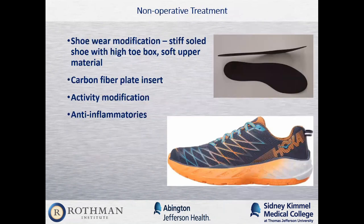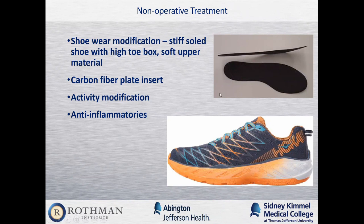Initial treatment includes non-operative shoe wear modification — a stiff-soled shoe like a Hoka with a high toe box to allow room for the bone spur and a soft upper portion that doesn't put pressure on the area. A carbon fiber plate can be placed in the shoe to artificially stiffen it. Activity modification and anti-inflammatories are also recommended, similar to treatment of other forms of arthritis.